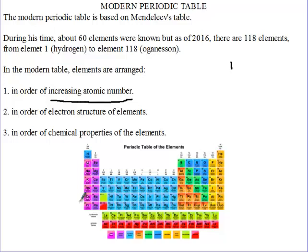Elements are also arranged in order of chemical properties. Elements in the same groups have similar chemical properties. When you look at the noble gases, the first and the last will have similar chemical properties. The same applies to halogens, alkali metals, and alkaline earth metals. Elements in the same group share similar chemical properties and also share the same electron structure.